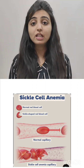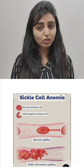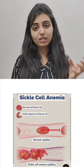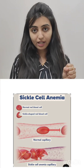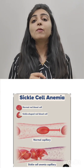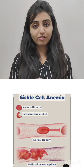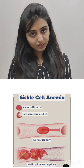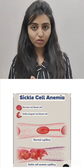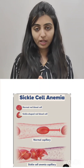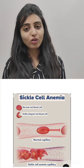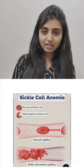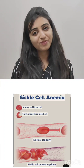Vascular occlusion occurs because the sickle RBCs aggregate and block the vessel, leading to vascular occlusion. This is the complete pathogenesis of sickle cell disease.